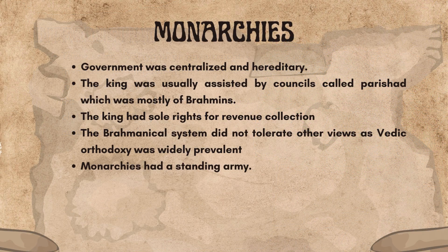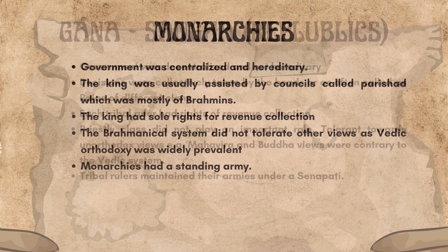Let us look at monarchies. Government was centralized and hereditary. The king was usually assisted by councils called Parishad, which was mostly made up of Brahmins. The king had sole rights for revenue collection. The Brahmanical system did not tolerate other views, as Vedic orthodoxy was widely prevalent. Monarchies also had a standing army.